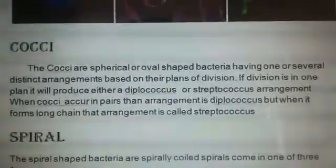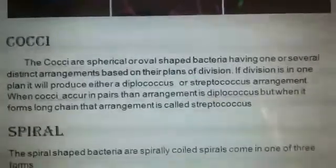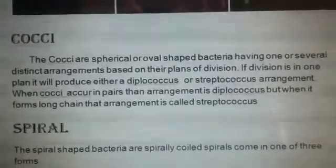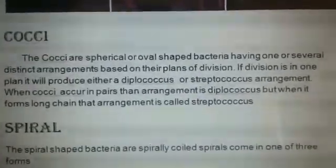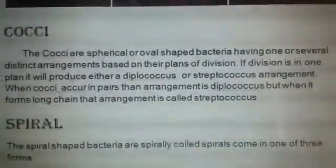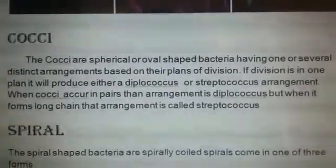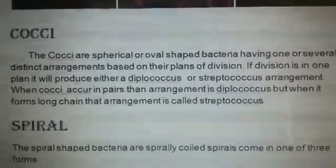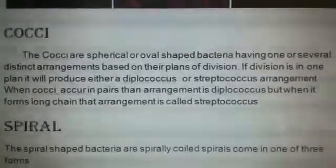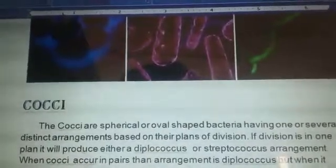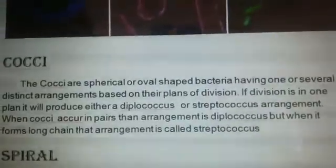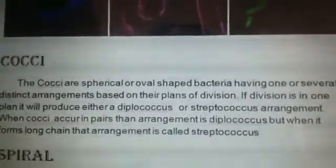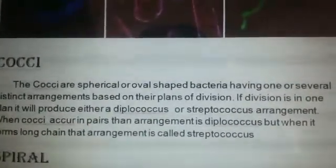What are cocci? Cocci are spherical or oval-shaped bacteria having one or several distinct arrangements. They have several kinds of arrangements based on their planes of division — not a single type of plan, but many. Their distinct arrangement is based on the plane through which they divide. For example, if division is in one plane, the arrangement would be diplococcus or streptococcus. Spirilla are simply spiral-shaped bacteria.